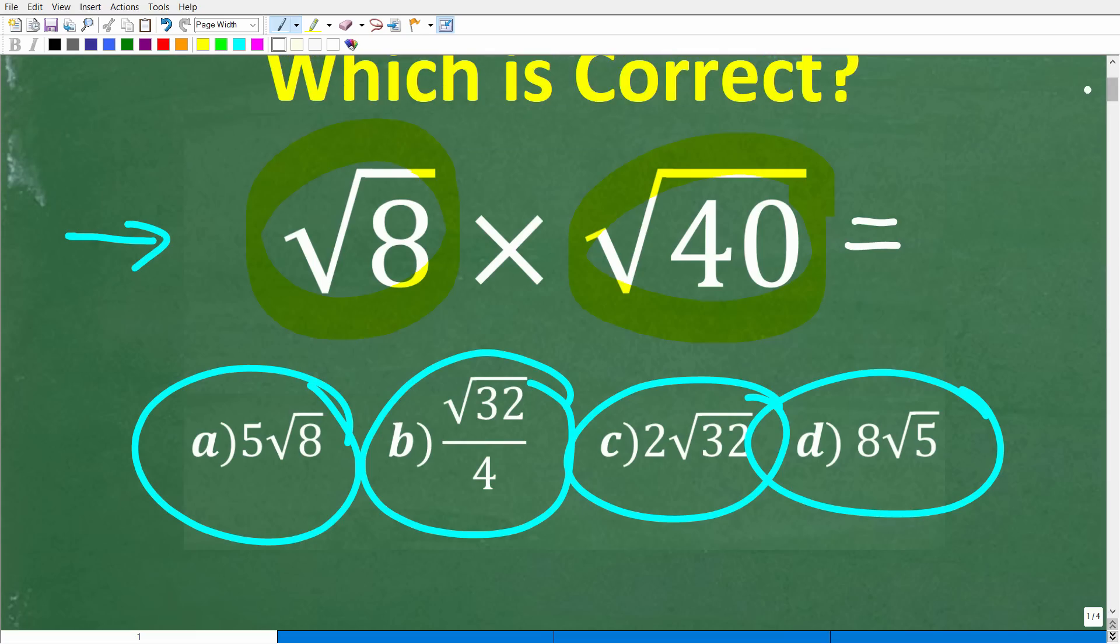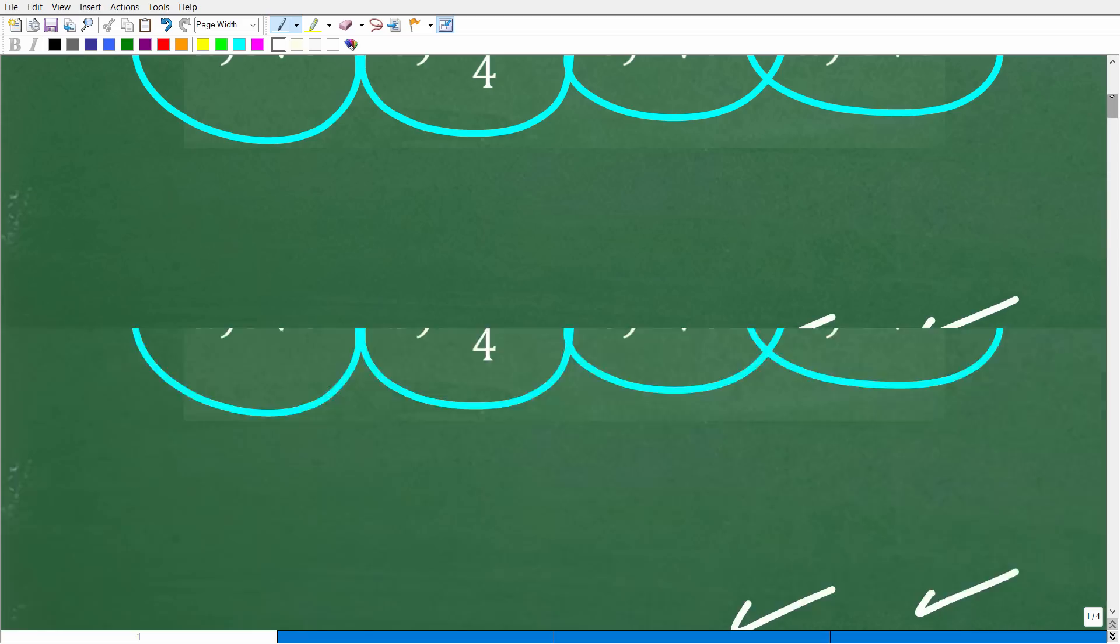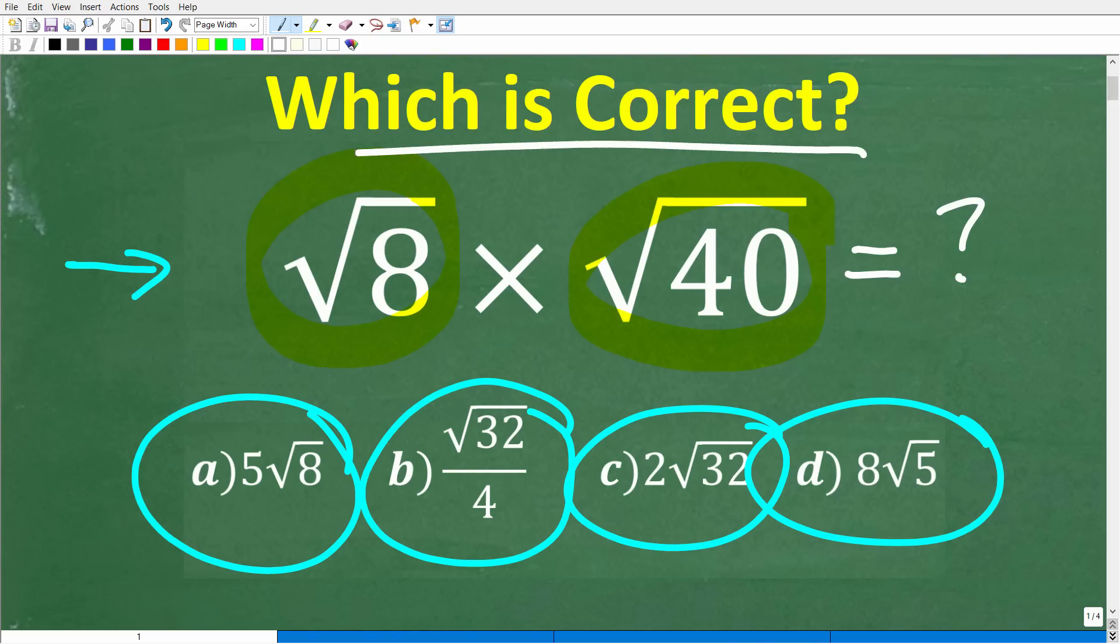The square root of 8 times the square root of 40, what is the correct answer? Well, let's take a look at that right now. The correct answer is D, 8 times the square root of 5. Now, if you got this right, you definitely get a happy face and A plus at 100% and a certificate of excellence for your knowledge of square roots.